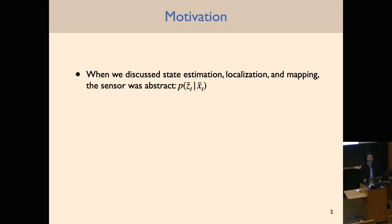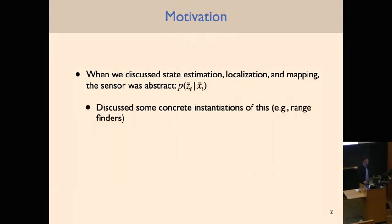So this is motivation. In the last module we were discussing localization, mapping, and state estimation, we discussed these pretty abstractly. We had an abstract sensor model — some probability distribution on sensor measurements ZT given the state of the robot XC — and we discussed some concrete instantiations of these sensor models, spending a little time on laser rangefinders or rangefinders in general.